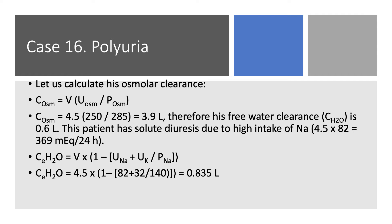Let's calculate osmolar clearance. We have urine osmolality 250 divided by plasma osmolality 285, then times urine volume 4.5, so we get 3.9 liters. So free water clearance is only 0.6, which is 4 minus 3.9. So this patient has solute diuresis due to high intake of sodium — 82 milliequivalents per liter times 4.5 liters equals 369 milliequivalents per 24 hours. Remember, low sodium diet is below 100, so this is a lot of sodium. If you calculate electrolyte-free water clearance, you get 0.8, so the amount of urine that is free of electrolyte is 0.8, close to a free water clearance of 0.6.